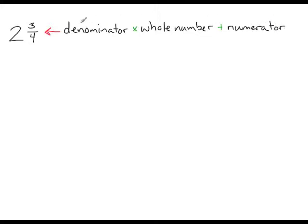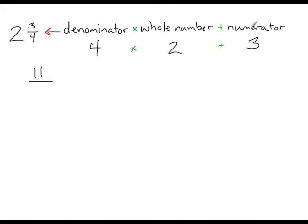So our denominator is 4, multiplied by our whole number 2, and to that we will add the numerator, which is 3. So 4 times 2 is 8, plus 3 is 11. This gives us the numerator of our improper fraction, and the denominator doesn't change, so our denominator is still 4.